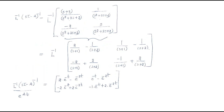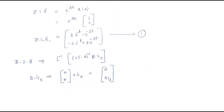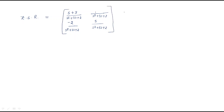Continuing the (sI - A)⁻¹ matrix: numerator terms are s+3, 1, -2, and s respectively. The denominator for all elements is s² + 3s + 2. The other term we have is 5/s from B·(1/s).